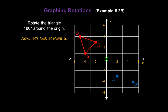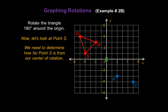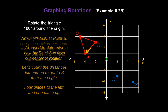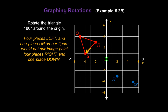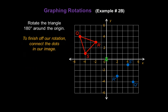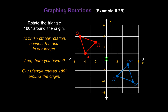Now let's look at point S on our figure. Again, we need to determine how far point S is from our center of rotation. Let's count: four places to the left and one place up. Four places left and one place up on our figure would put our image point four places right and one place down. So start at the center of rotation again, move four places to the right, and finally one place down — and we arrive at our point S prime. To finish off our rotation, just connect the dots in our image. And there you have it — our triangle rotated 180 degrees around the origin.